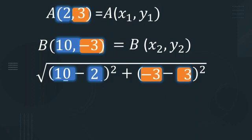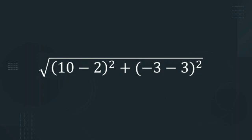So in the next step we can operate: 10 minus 2 the whole square plus negative 3 minus 3 the whole square.